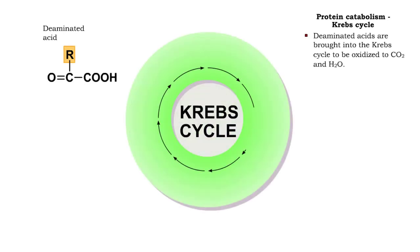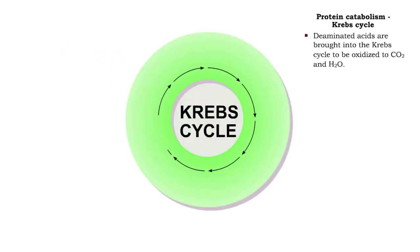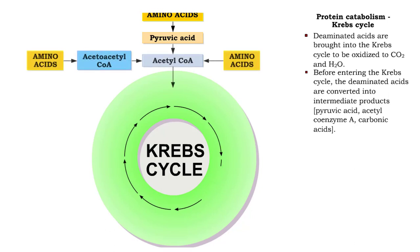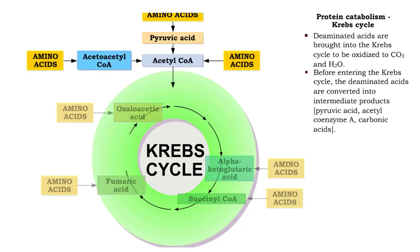Deaminated acids are brought into the Krebs cycle to be oxidized to carbon dioxide and water. However, prior to entering the Krebs cycle, they must be converted into intermediate products like pyruvic acid, acetyl coenzyme A, or the carbonic acids used in the Krebs cycle.